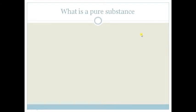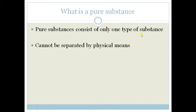So what is a pure substance? A pure substance consists of only one type of substance and cannot be separated by physical means. We cannot separate it by sieving, using a magnet, or sorting, but we can separate it by chemical means through chemical reaction.